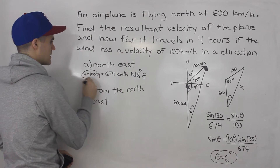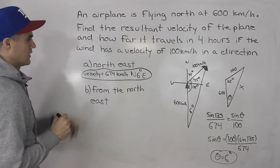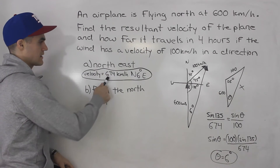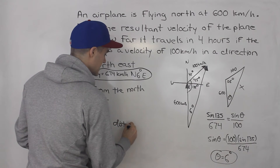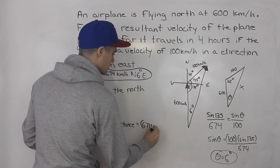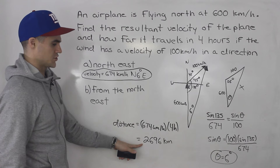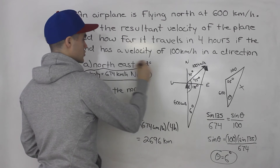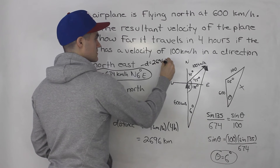That is the answer for the velocity for part A. They also ask how far does the plane travel in four hours. Distance equals speed times time: we take the resultant speed of 674 kilometers per hour and multiply by four hours, and you end up getting 2696 kilometers. So the distance traveled in part A is 2696 kilometers.